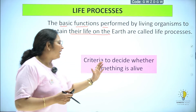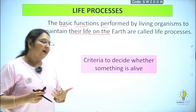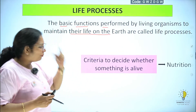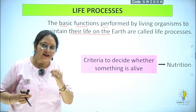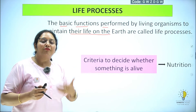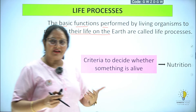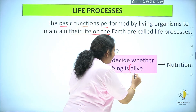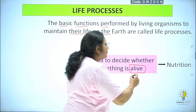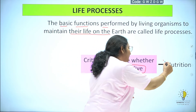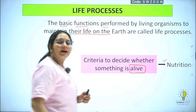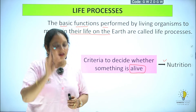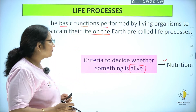सबसे पहले criteria क्या है एक organism का, कि वो जिन्दा है या नहीं। पहला, वो nutrition ले रहा है, खाना खाना। Food procure करना, खाना लेना is nutrition. अगर कोई जिन्दा है तो वो खाना तो खाएगा ही। अगर एक unicelled organism भी है, amoeba भी है, तो बिना खाना खाए वो जिन्दा नहीं रह सकता।